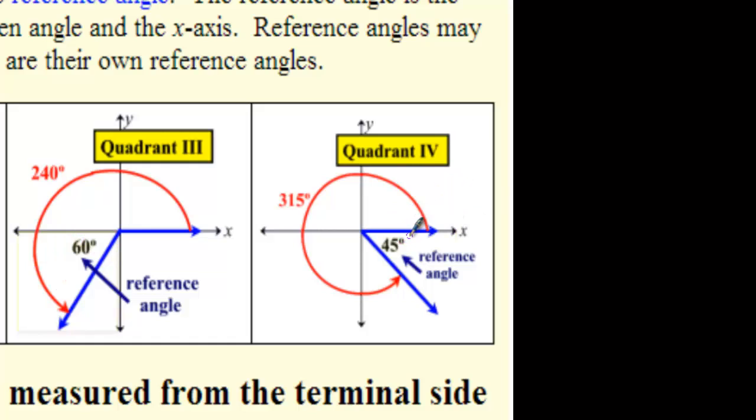In quadrant 4, we have a 315 degree angle, which by the way in radians, what would that be? It would be 7π over 4. This 315 degree or 7π over 4 angle, if we were going to draw this right triangle, it would look something like this. And that 315 degree angle would form a 45 degree or π over 4 reference angle.